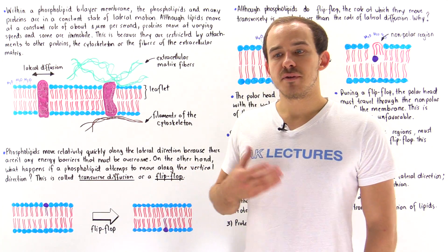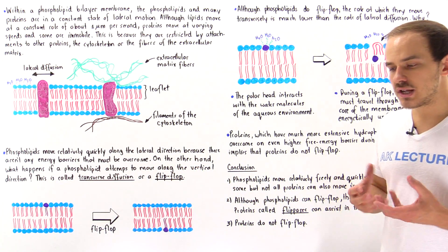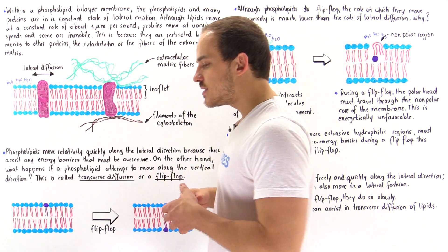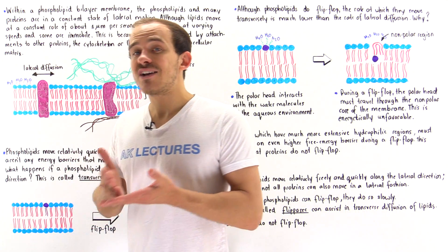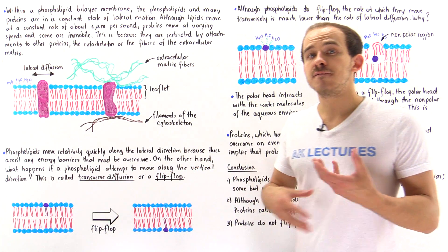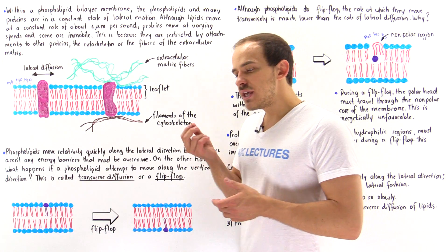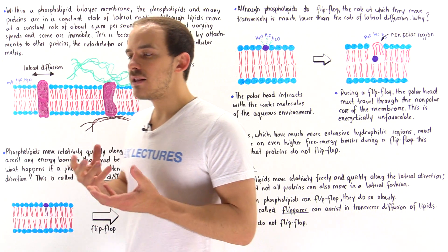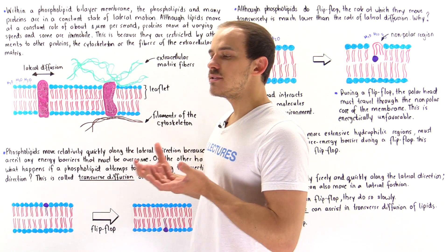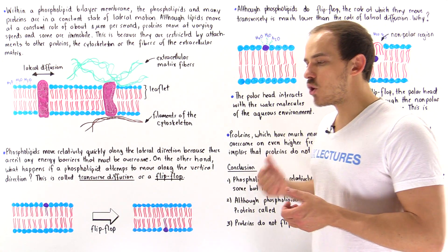The fluid mosaic model of the membrane describes the structure and organization of the biological cell membrane. It tells us the structure is not rigid or static in nature; on the contrary, it's very fluid-like. That's because the individual constituents — the molecules that make up the membrane — are in a constant state of motion. We have two types of motion.